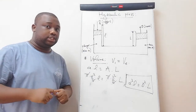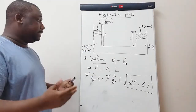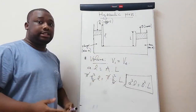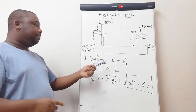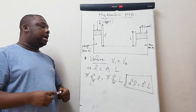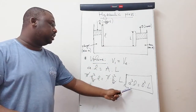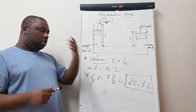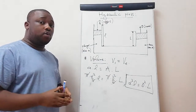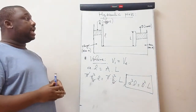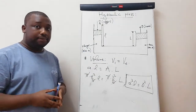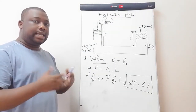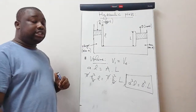To summarize: volume displaced by the plunger equals volume received by the ram. We set V1 = V2, and after simplification that relationship is what we get. I'll now show you the relationship on work done.